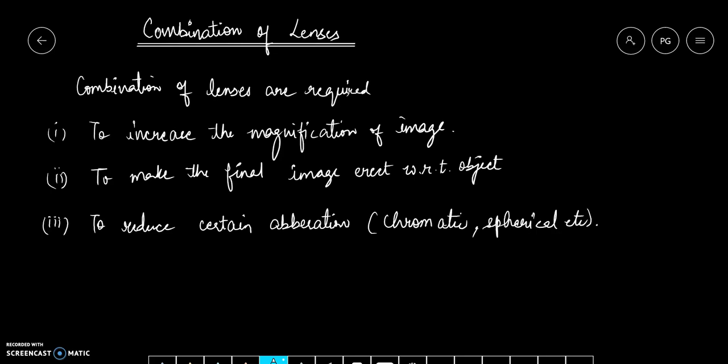And the third case, to reduce certain aberrations like chromatic and spherical aberrations. If a lens is very thick and white light falls on it, then different color lights will focus at different points due to which colors will be distributed and we will see chromatic aberration. So instead of using a single thick lens, we often use combination of thin lenses so that these aberrations can be minimized, about which we will discuss later.